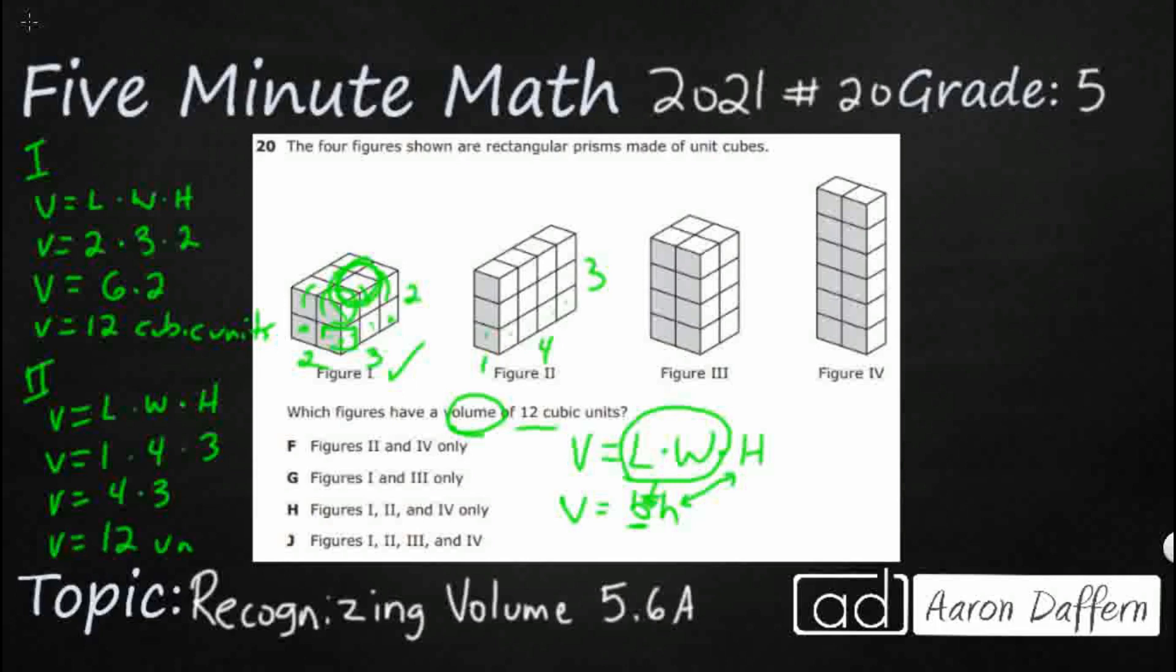So my volume here is 12. I can write cubic units another way. I can write units with a little 3 as an exponent. That's another way to do it. So they're both good. Figure one, figure two are good to go.